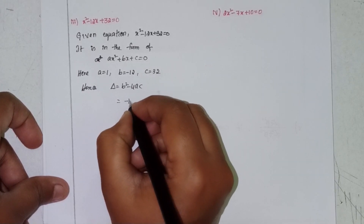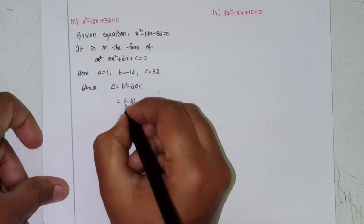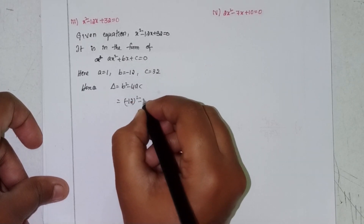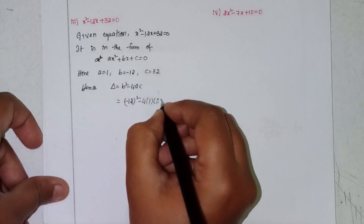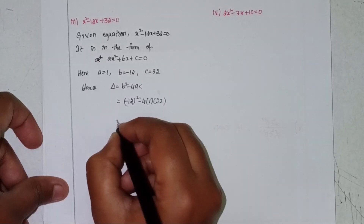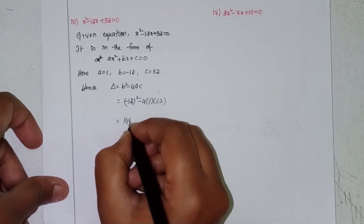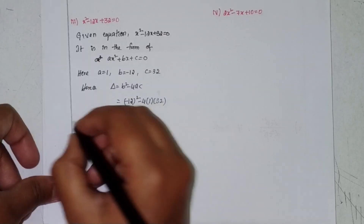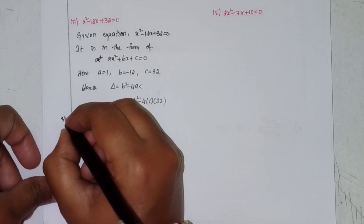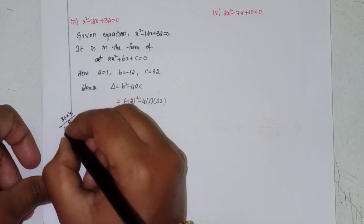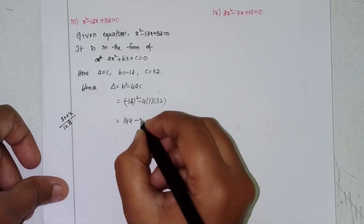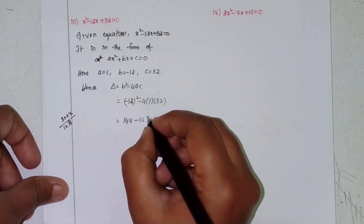b means -12 whole square minus 4 × 1 × 32. That gives 144 minus 128. Taking borrow: 14 minus 8 = 6, so the result is 16.